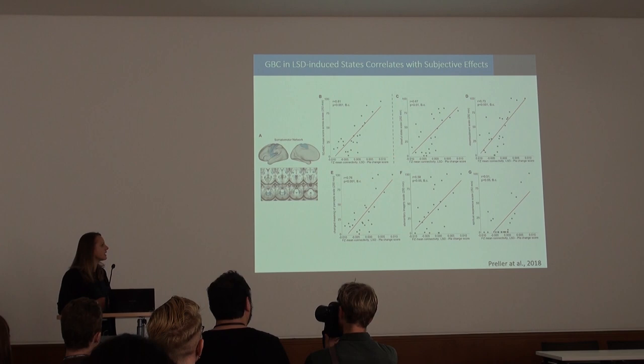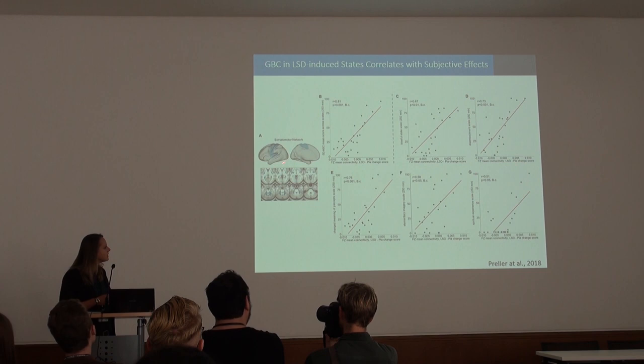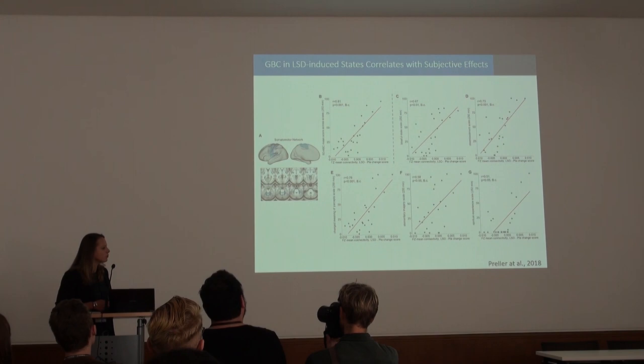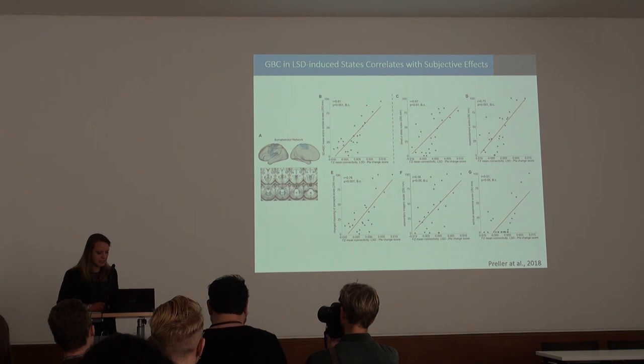We also asked what functional alterations in the brain correlate with the subjective effects participants experience. What we found is that the somatomotor system — specifically functional connectivity within the somatomotor network — seems to be very important for the subjectively induced effects.